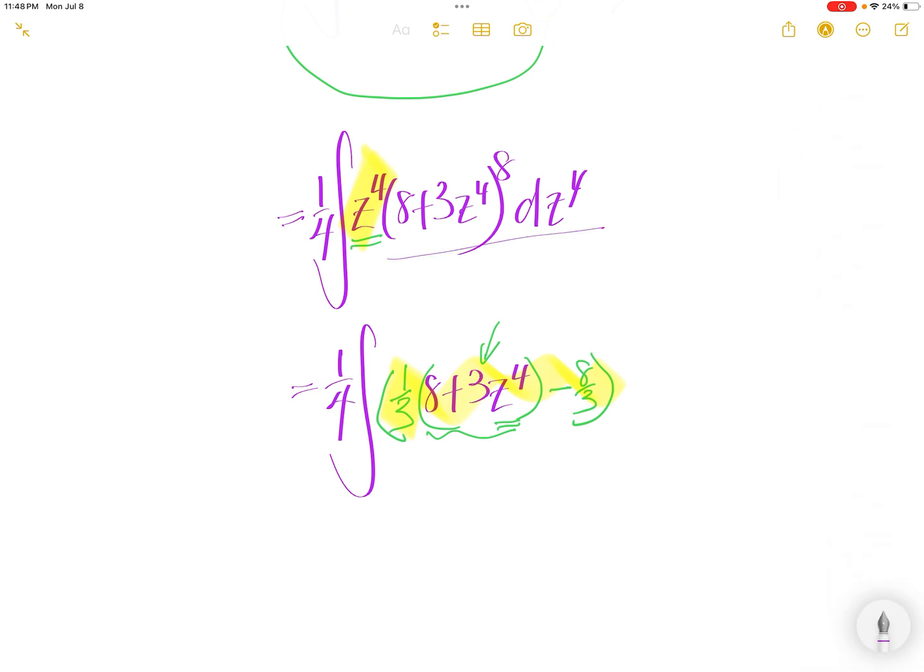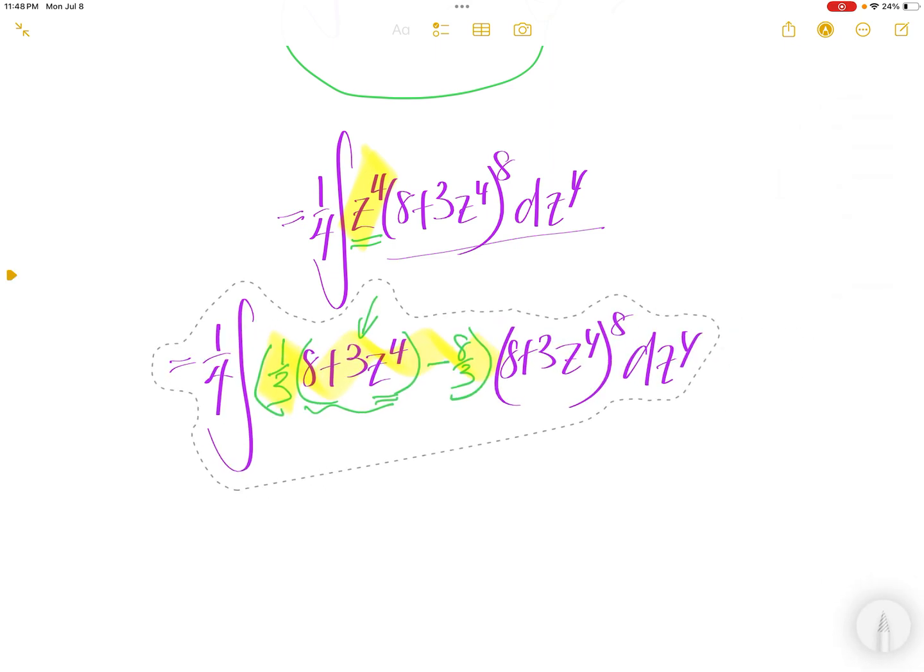Now, let us put back this piece: 8 plus 3z to the power of 4, to the power of 8, dz to the power of 4.